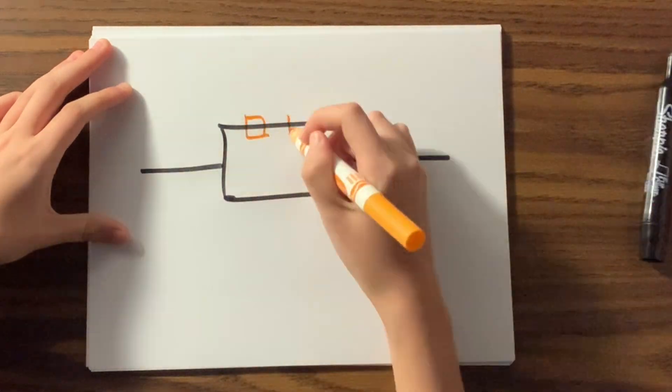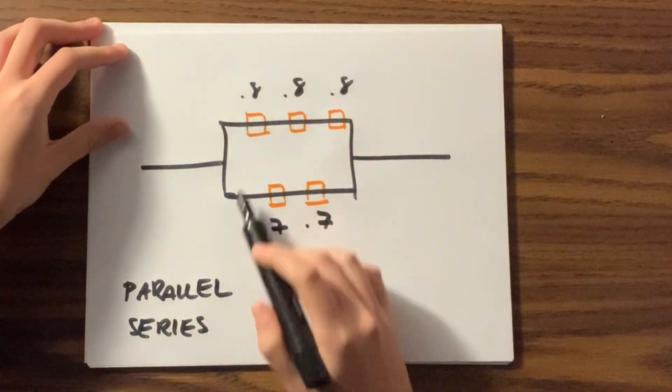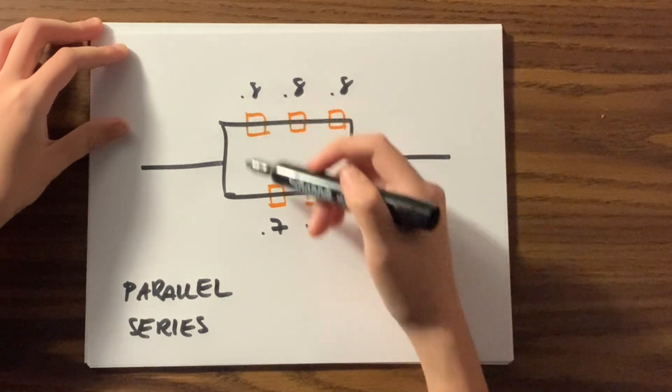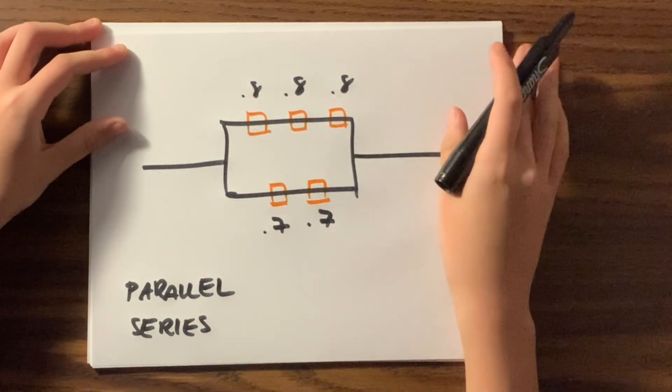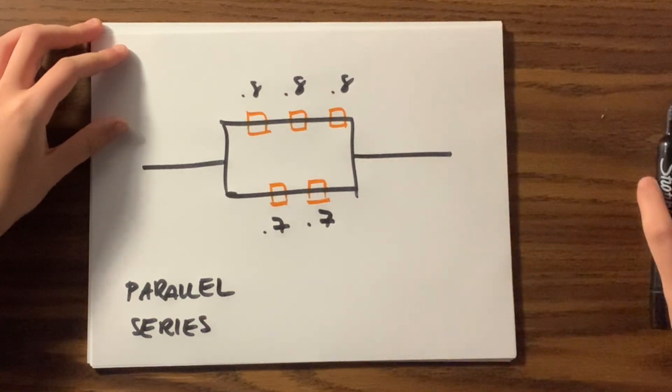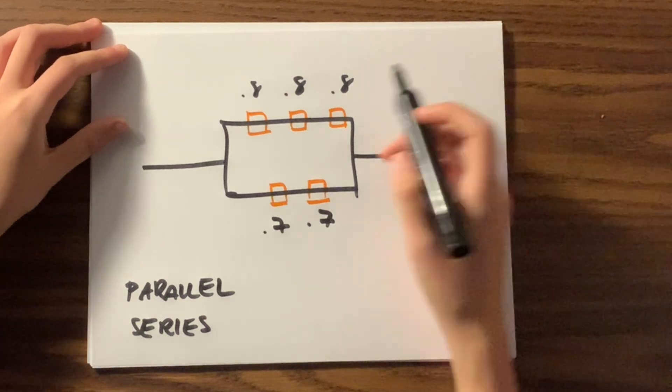Just going to draw a quick circuit. This is a series, these are also in series, and overall what's up here and what's down here is in parallel. We can break the circuit down by saying that the probability of the top part happening is just a simple series problem.